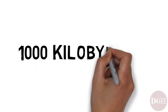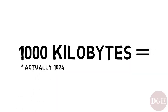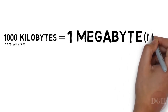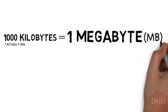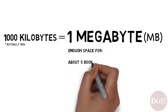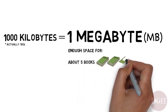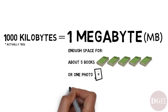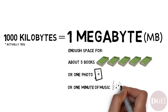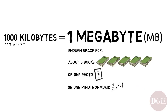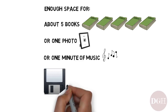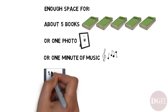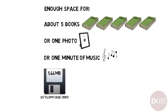So what's it called if you have a thousand kilobytes? It's called a megabyte, often abbreviated as MB. One megabyte is enough space to hold about five large books, or one photo, or one minute of music. This three-and-a-half-inch floppy disk from the 1980s held 1.4 megabytes of data, which was pretty good at the time because most files were pretty small.